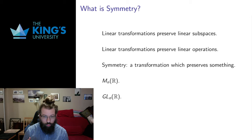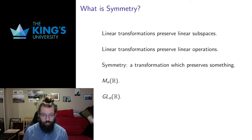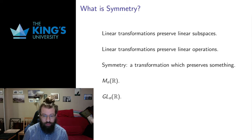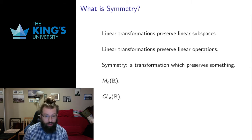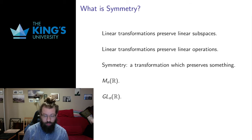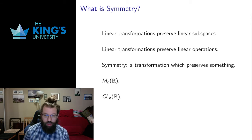We can think of many of the definitions in this course as preserving something. Even back to the original definition of a linear transformation: geometrically it was a thing that preserved linear subspaces, and algebraically it was a thing that preserved linear operations. So the notion of symmetry I'm going for is transformations that preserve some kind of thing, and the kind of thing can be quite general.